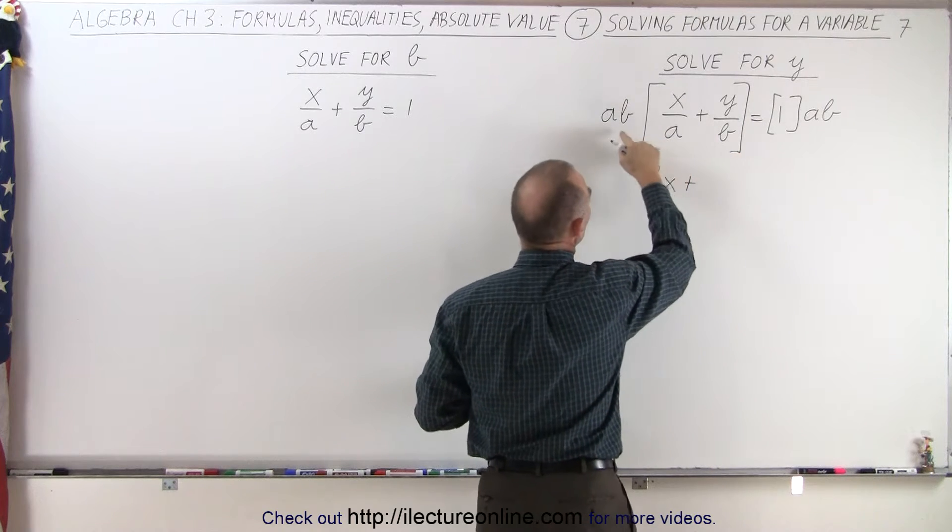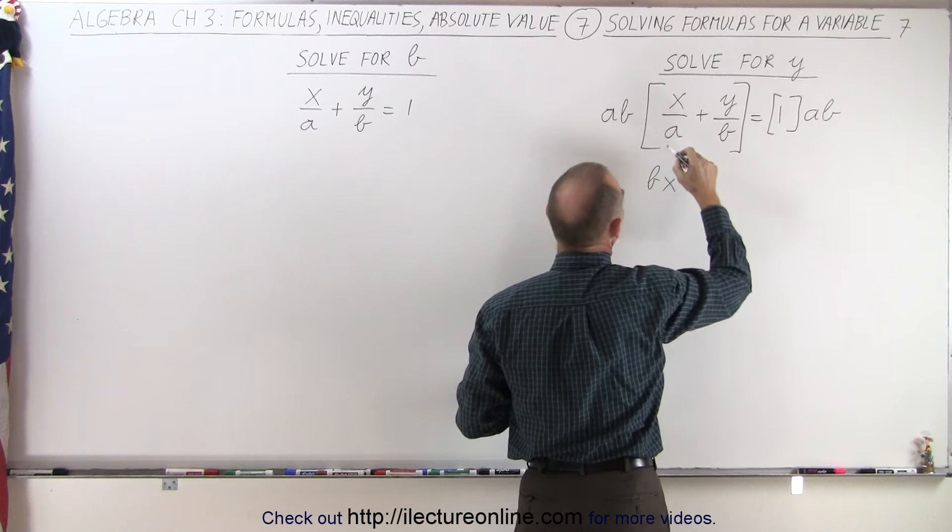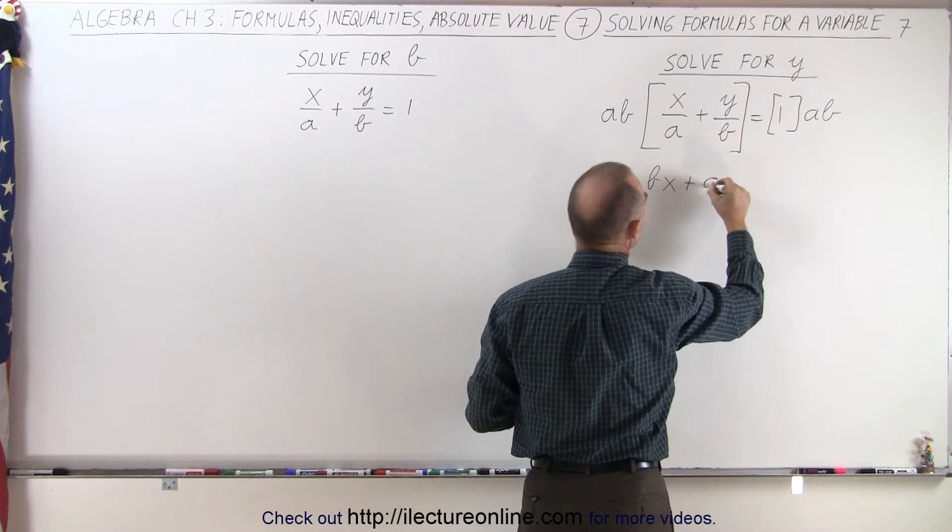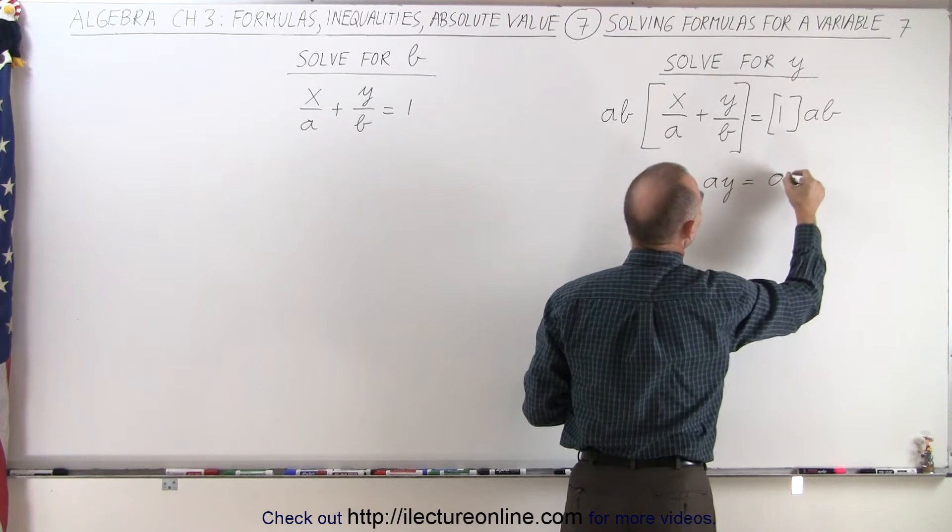On the second term, notice when I multiply a times b times y over b, the b's cancel, and then I end up with a times y. And on the right side, 1 times ab is simply ab.